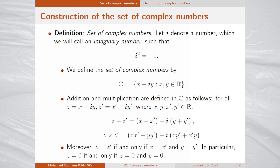Keep in mind that to define the set of complex numbers, we firstly define the elements of this set in the form x plus iy, then we define the operations — in particular addition and multiplication — and finally we define the case of equality of two complex numbers.